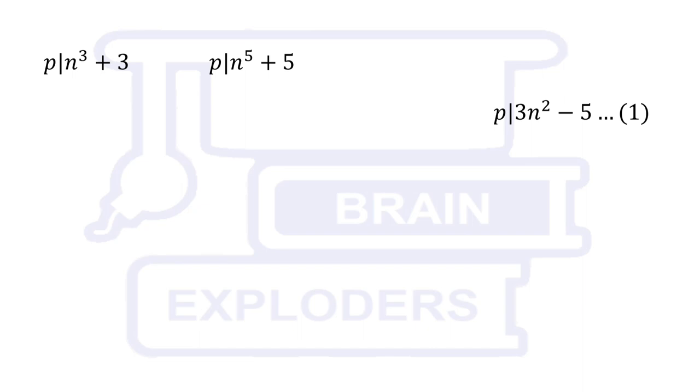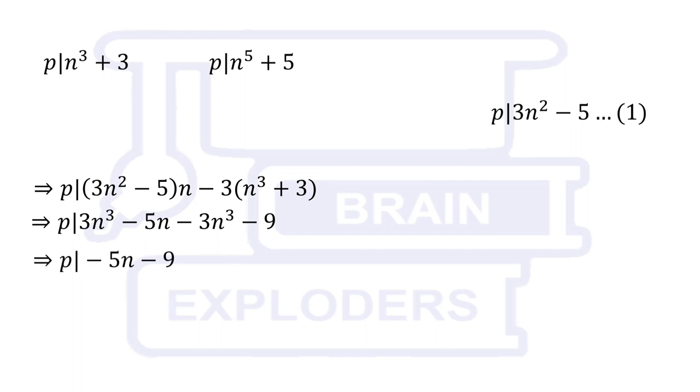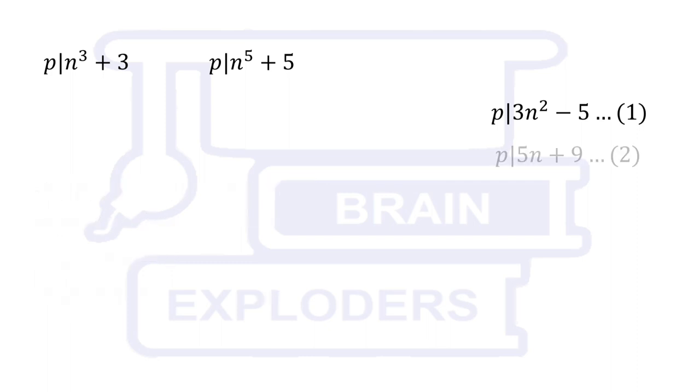Now we will try to cancel out n cubed and 3n squared. They can get cancelled if both become 3n cubed. So we multiply 3 with n cubed plus 3, n with 3n squared minus 5, and find their difference. We find that 5n plus 9 is also divisible by p.